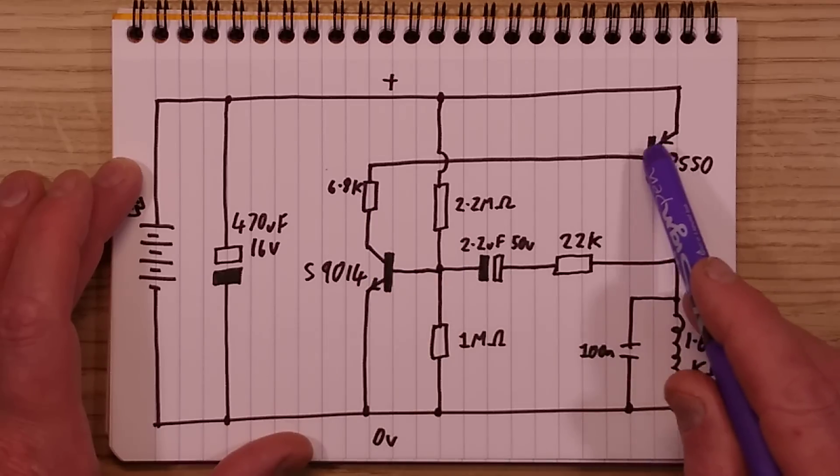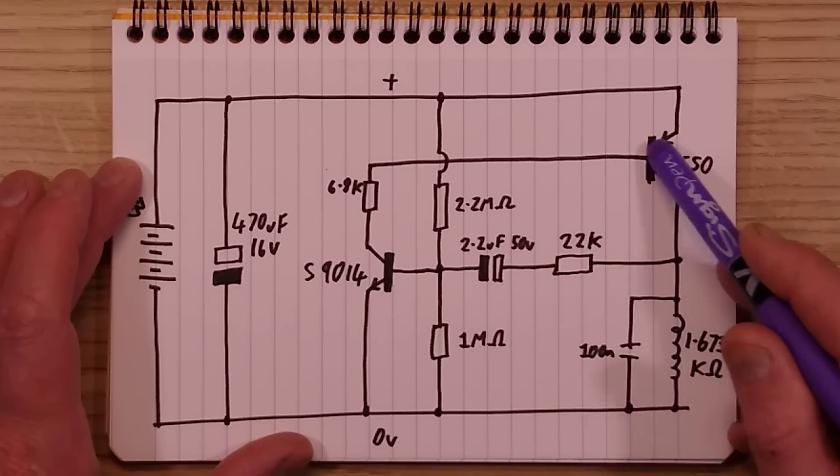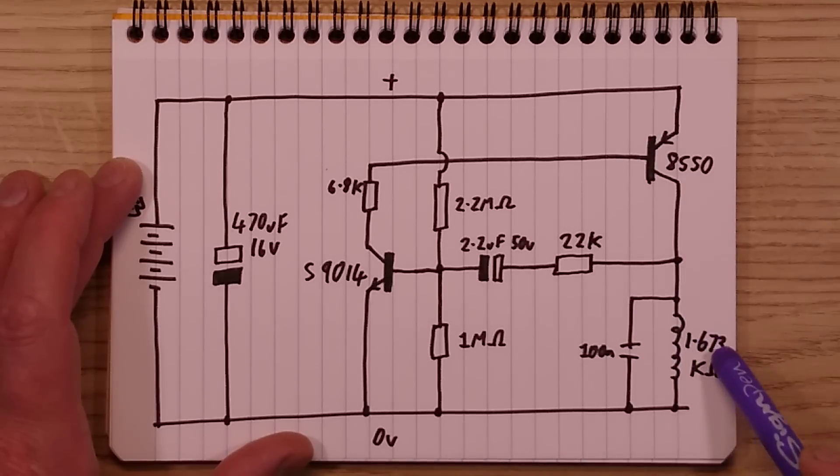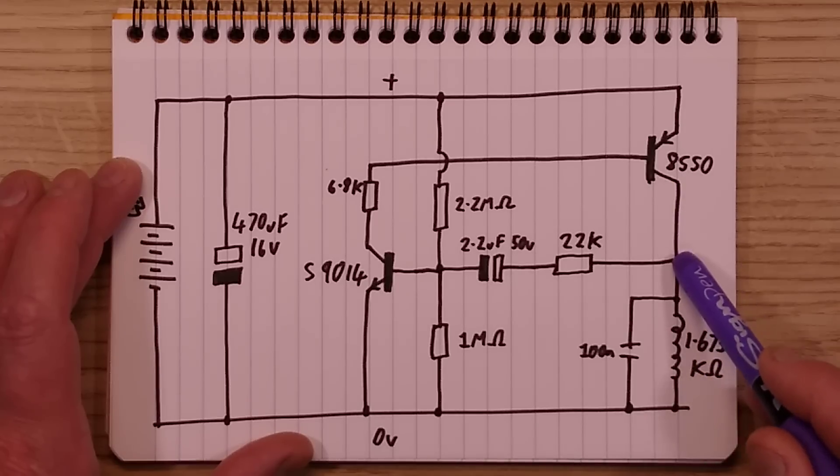When it does, current will flow through this transistor, this resistor here, and it will power the base of this transistor which starts turning on. That does two things - it turns on the very high impedance coil here, that's the kicker and sense coil 1.673 kilo ohm, but it also provides a feedback path through this 22k resistor and this decoupling capacitor to actually drive the base of this transistor a bit harder.